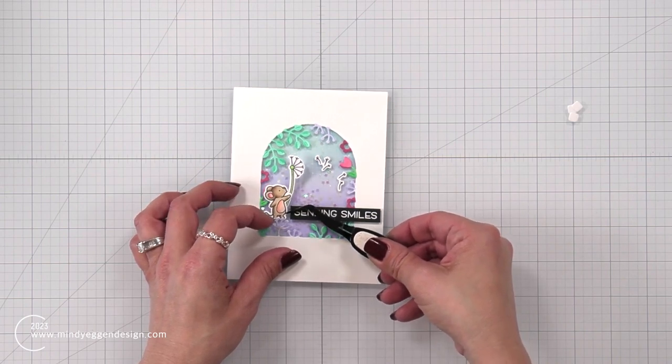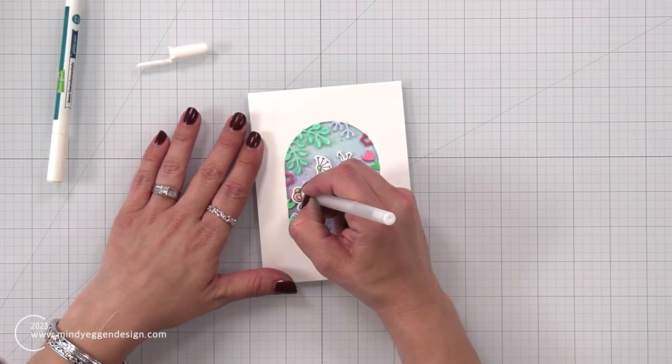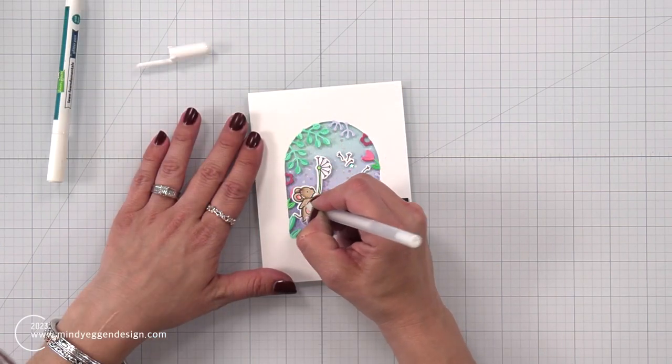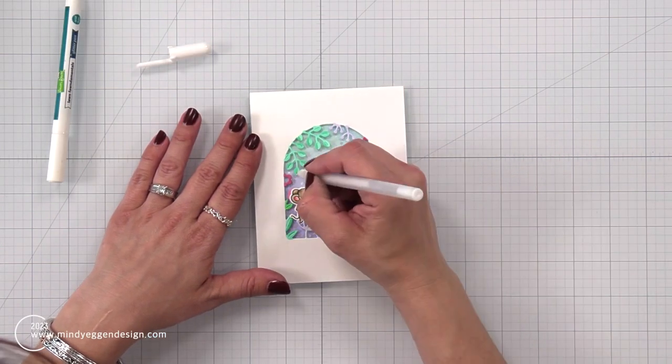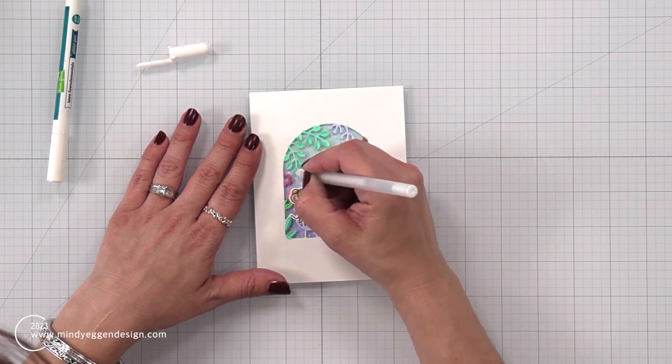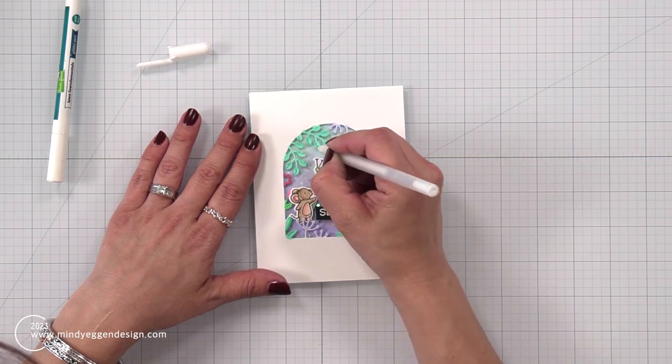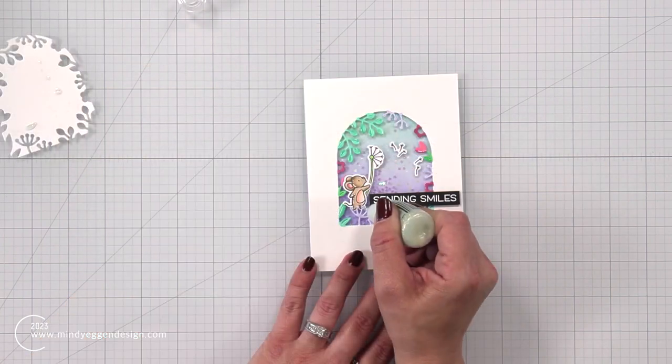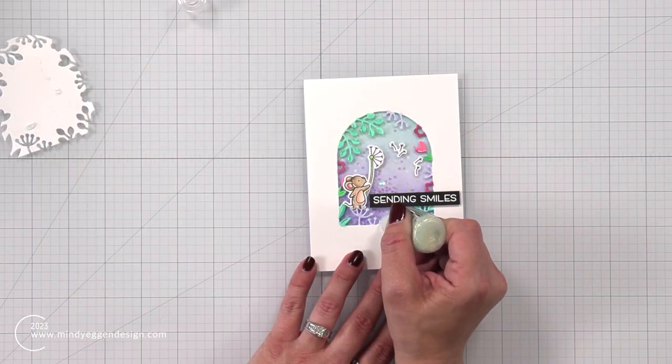So while you could really have fun building up this scene with the beautiful flowers and vines coming in from the window, I thought having just this simplicity of the small mouse there was super cute. Now I did bring in a white gel pen and added some highlights to some of the leaves and the mouse.